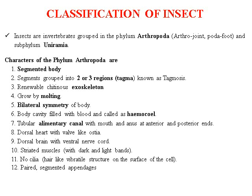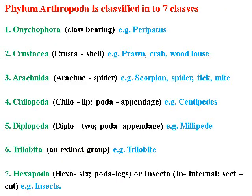This is the basic character of phylum Arthropoda, which is further classified into seven classes. First is Onychophora, the claw-bearers — the example is Peripatus. Second is Crustacea — meaning shell-like structure — and includes crab, prawn, and woodlouse.